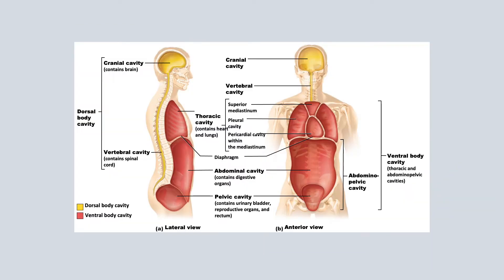There are two main body cavities: the dorsal body cavity and the ventral body cavity. Looking at the lateral view, we can see the dorsal body cavity is further divided into the cranial cavity and the vertebral cavity.